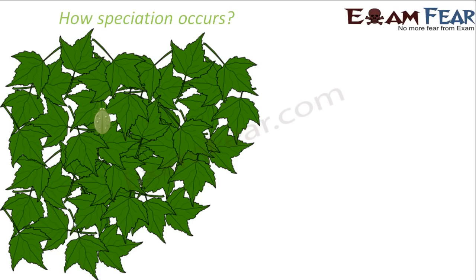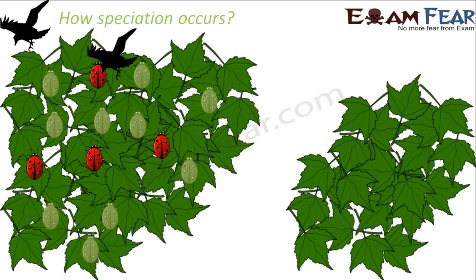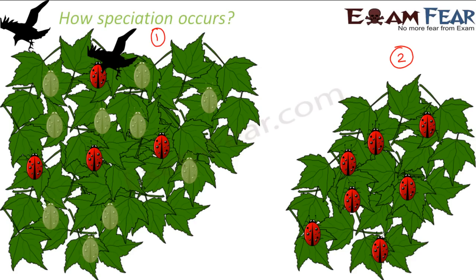Let us suppose we have an area with two different localities of bushes inhabited by beetles. In locality 1, there are too many crows, so the crows will eat up all beetles which are non-green in color because they can see them. So we will have more green beetles in locality 1. In locality 2, there are no crows, so there are more red beetles — green beetles are not much encouraged there through natural selection.